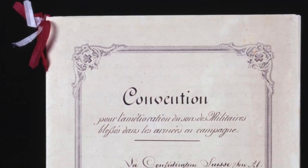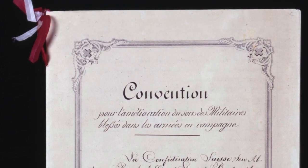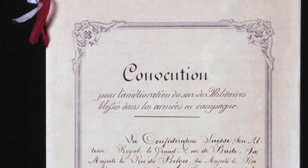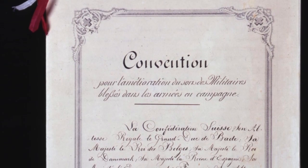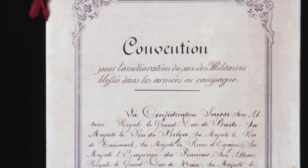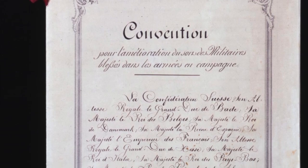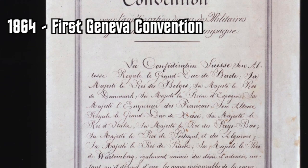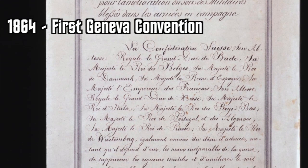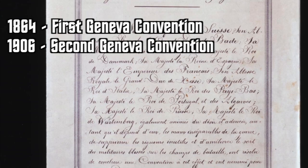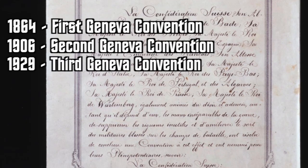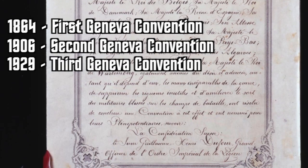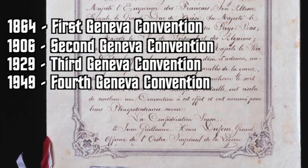The Geneva Conventions — hence the plural — actually refer to a series of four different treaties signed on four different occasions: one in 1864, one in 1906, one in 1929, and one most notably in 1949.